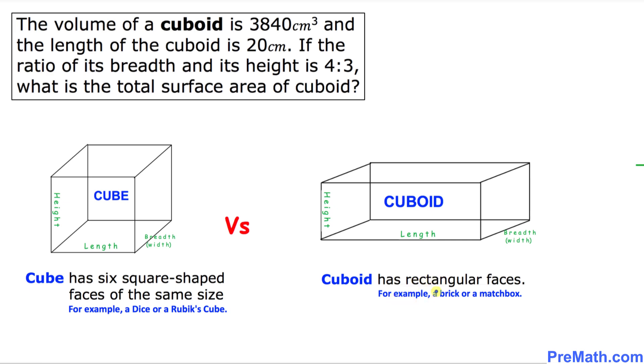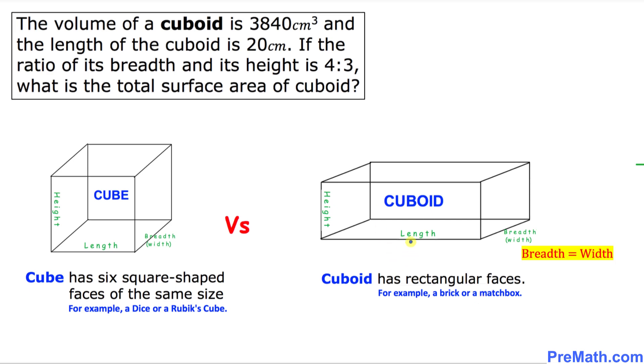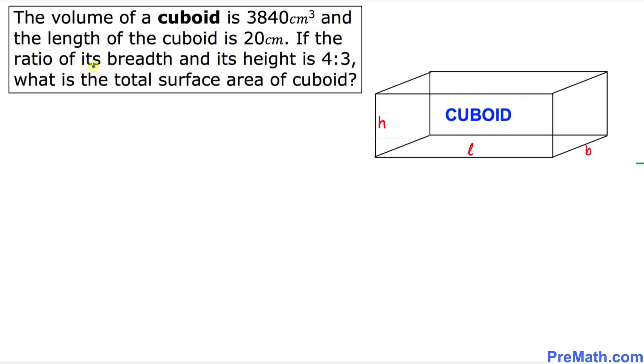The examples are it could be a brick, could be a matchbox. Moreover, this is the length of the cuboid, and this is the height, and this side is called breadth or sometimes we call it width. Now let's get started with this problem.